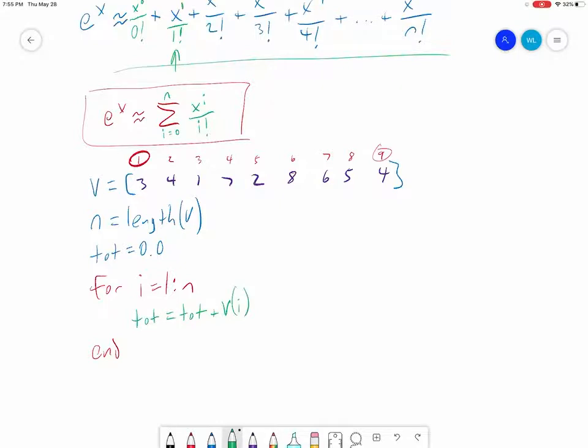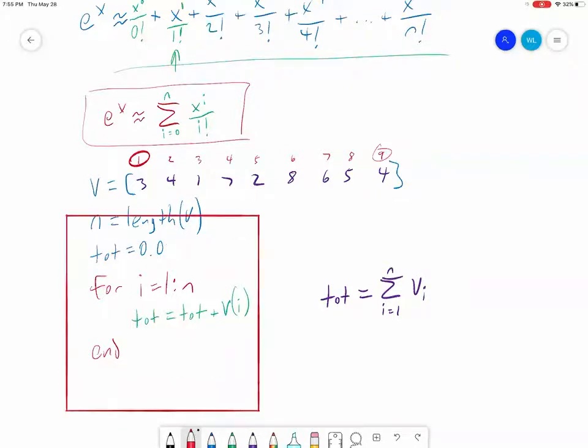So what we're actually doing here, we can write this out in mathematical summation format as well. So our total is going to be equal to the summation starting at I equals one and going through N, which is the length of V, the sum of all the V sub I values. So now we have two ways of writing the same thing. We have the MATLAB for loop method and we have the mathematical summation. And each part of the summation is something we're going to be able to find in that MATLAB for loop.